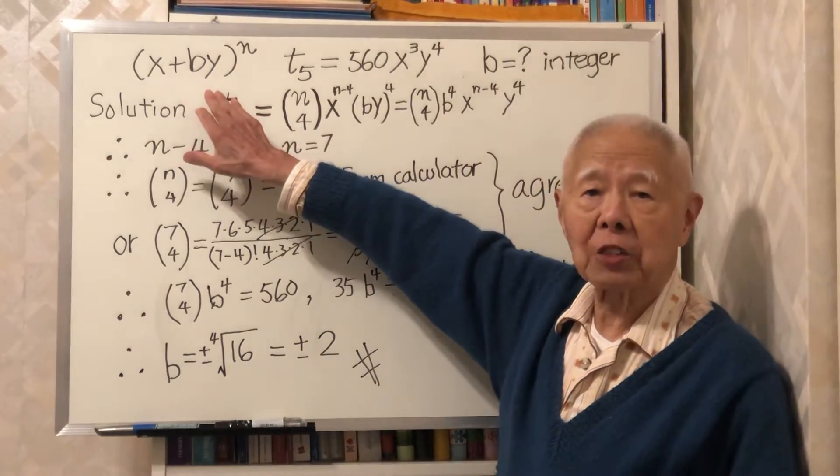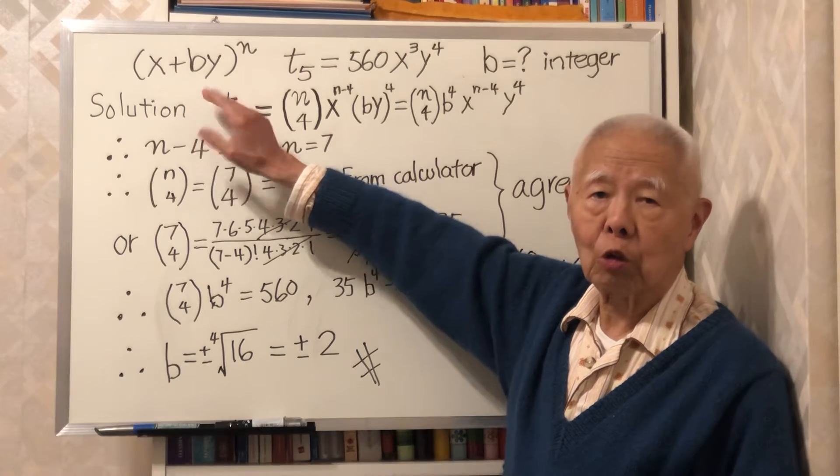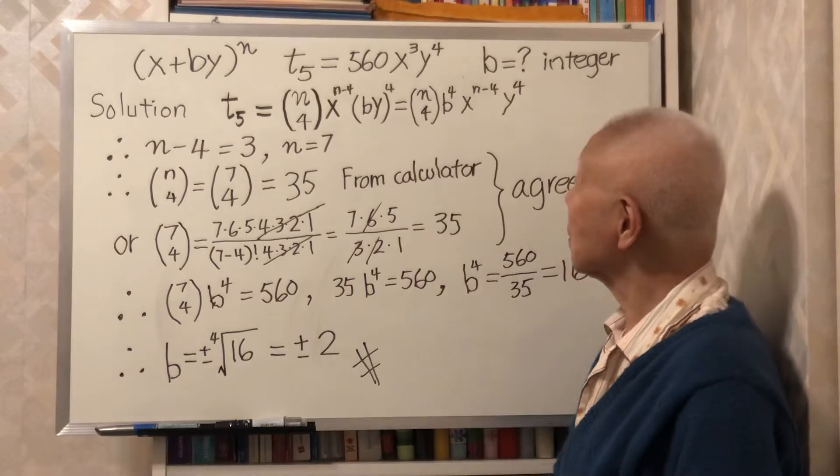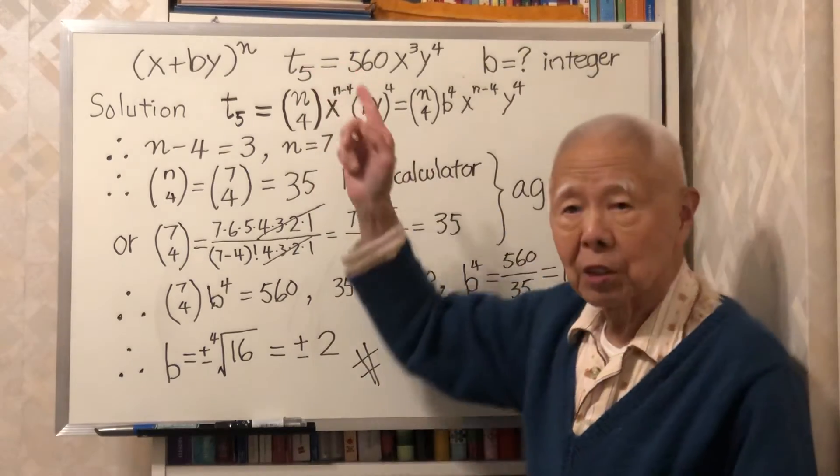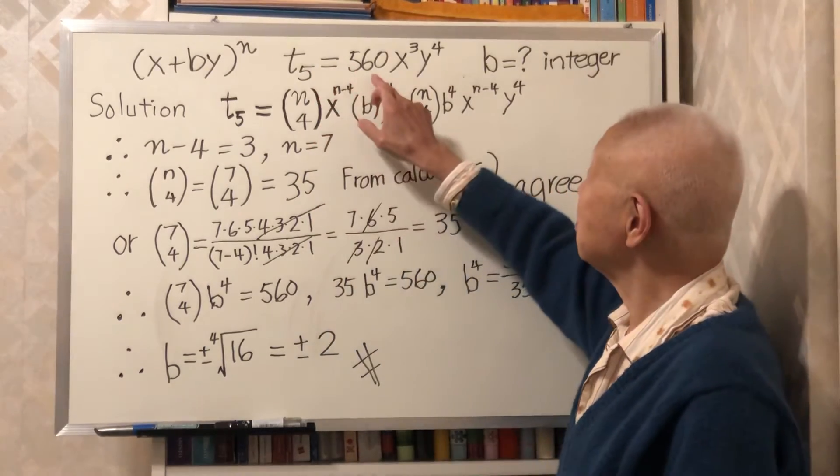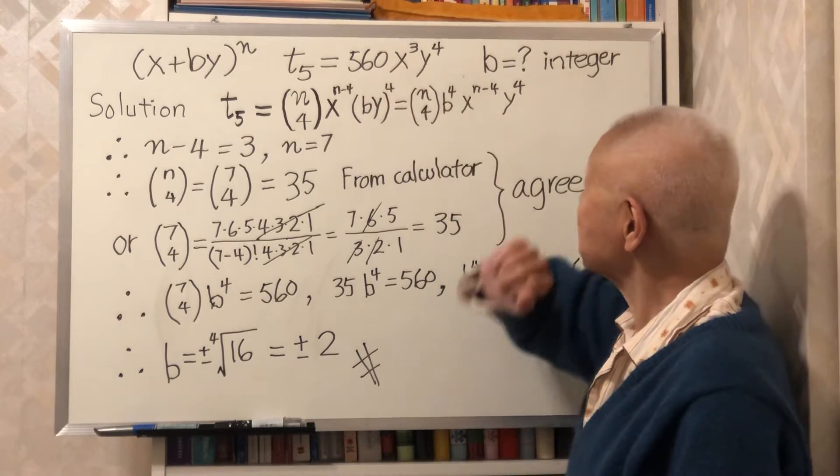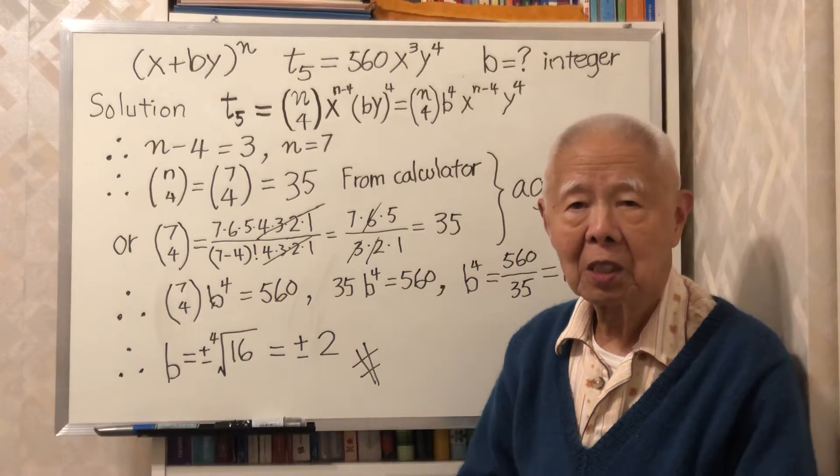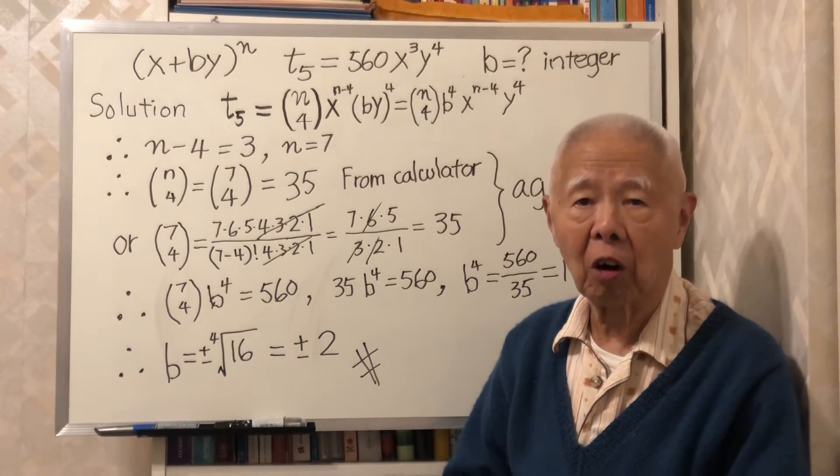Given this binomial (x+by)^n goes to exponent n. The fifth term t_5 is given. We want to find what is the value of b.